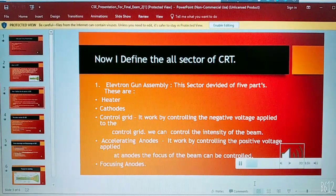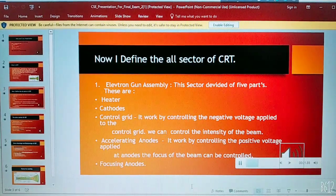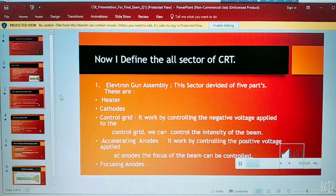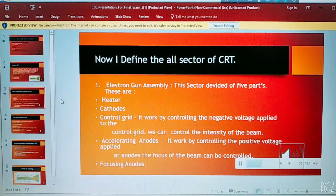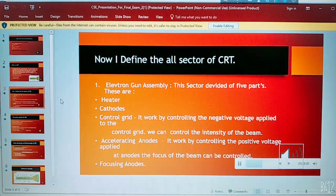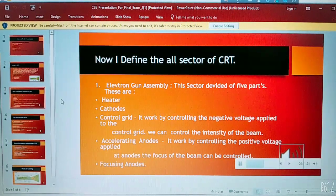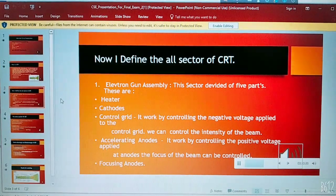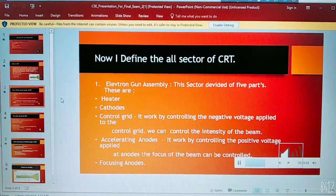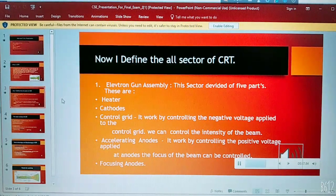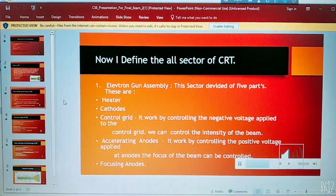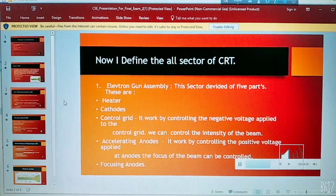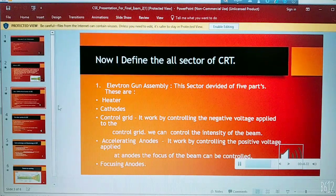The control grid works by controlling the negative voltage applied to the control grid. We can control the intensity of the beam. The fourth one is accelerating anodes. It works by controlling the positive voltage applied at anodes so focus of the beam can be controlled. And the last one is focusing anode.